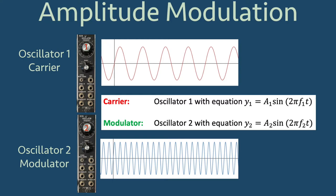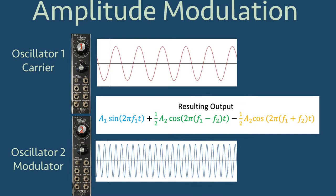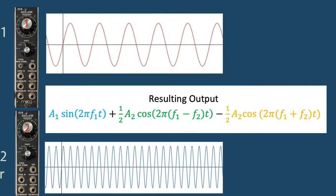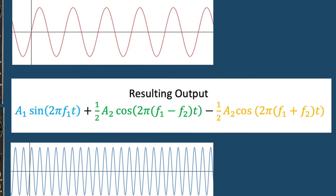From the work completed in the amplitude modulation video, the resulting waveform when we modulate the carrier with the modulator is a1 sine of 2 pi f1 t plus 1 half a2 cosine of 2 pi f1 minus f2 t minus 1 half a2 cosine of 2 pi f1 plus f2 t.